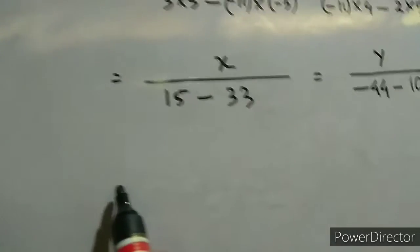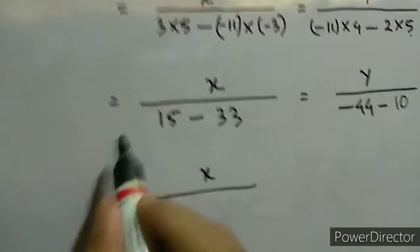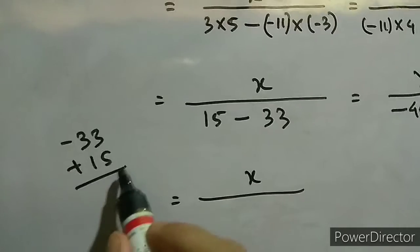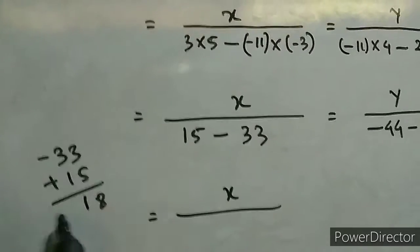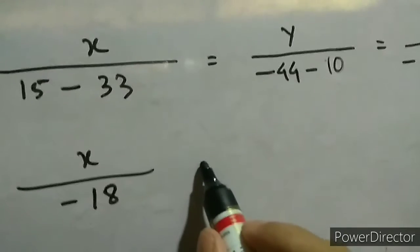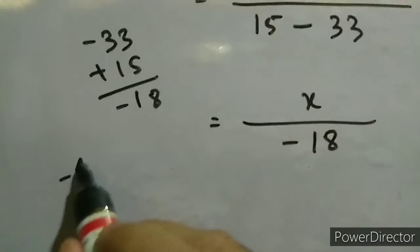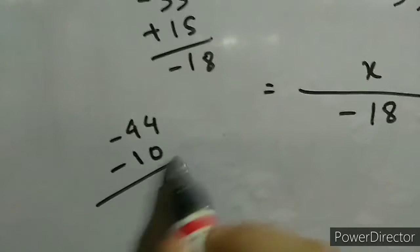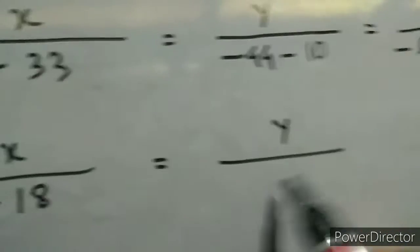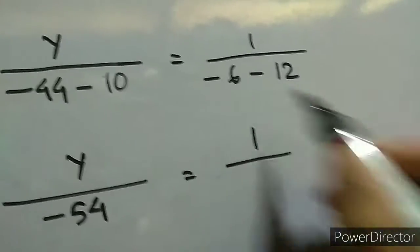So we get plus 15 and plus 33 — one minus and one plus means we subtract: 33 minus 15 equals 18, and since the minus sign applies, this is minus 18. For y: minus 44 minus 10 — both are negative so we add, giving minus 54. Here also minus 12 minus 6, both negative, so we add to get minus 18.